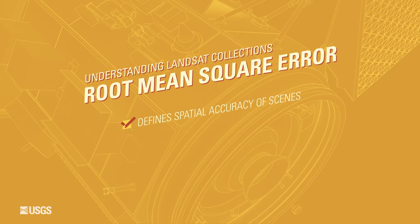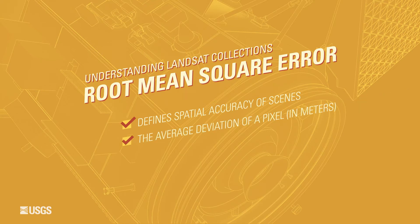RMSE is the root mean square error, and it's used to define how spatially accurate an image is. Landsat Collections data is processed to minimize this error, in most cases to less than a third of a pixel.